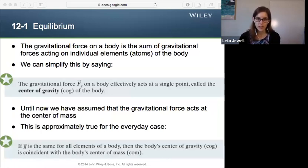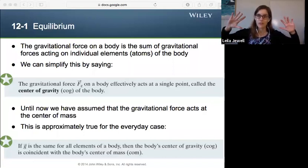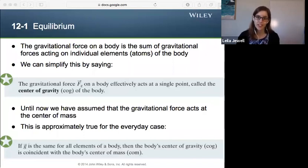All right. One last thing in this equilibrium section. Gravitational force on body is the sum of the gravitational force acting on all the individual elements of the body, which are just the atoms. We all have plenty of atoms inside of us. But we can simplify this. Instead of saying that I need to consider all of the atoms inside me, which would be very painful for the calculation, we can say the gravitational force on body effectively acts at a single point called the center of gravity of the body, which is often abbreviated as cog. Until now, we've assumed the gravitational force acts at the center of mass, which is approximately true for the everyday case. In most cases, gravity acts on our center of mass. In many cases, we'll see that the center of mass is the same as the center of gravity.